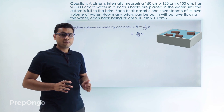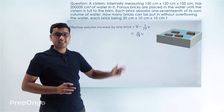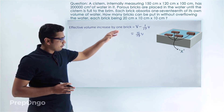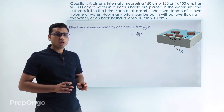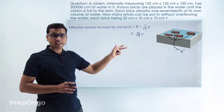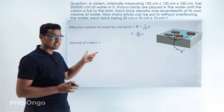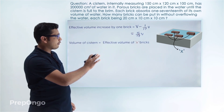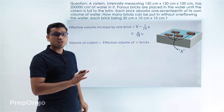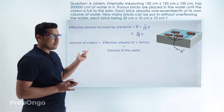Now we are given that we have to fill this water up to the brim of the cistern. So how many bricks are required for that? Let's say that x bricks fill up the water to the brim. The net volume of the cistern will be equal to the effective volume of these x bricks plus the water which was inside previously. So the volume of cistern equals effective volume of x bricks plus the volume of water originally present in the cistern.